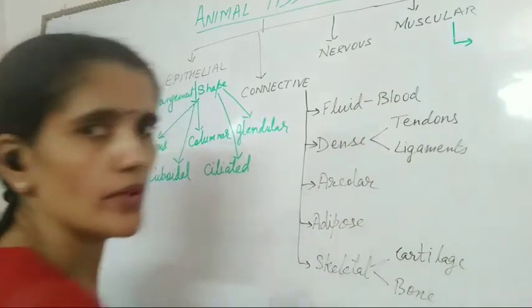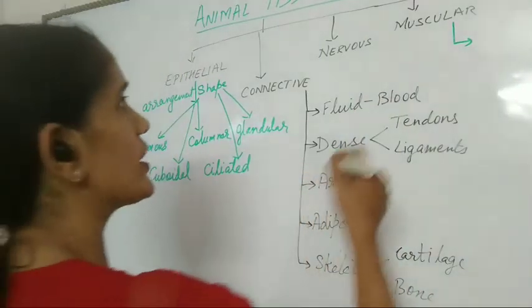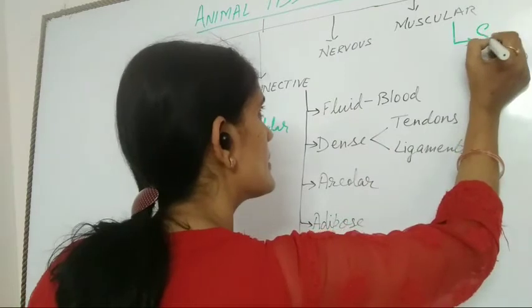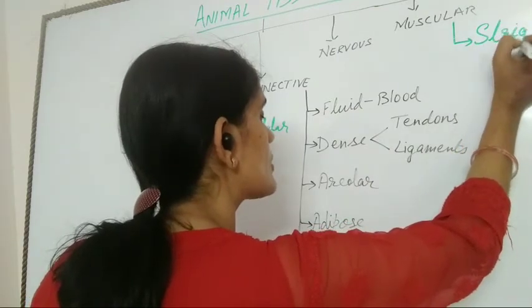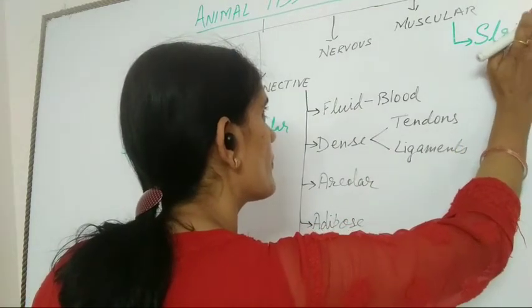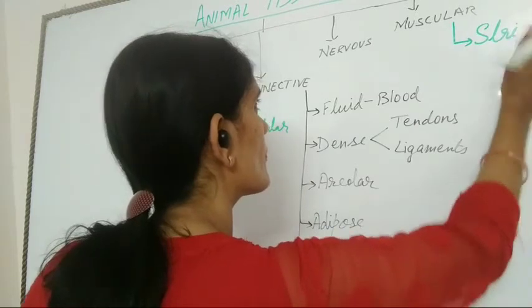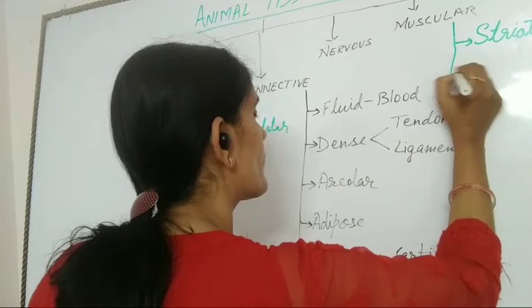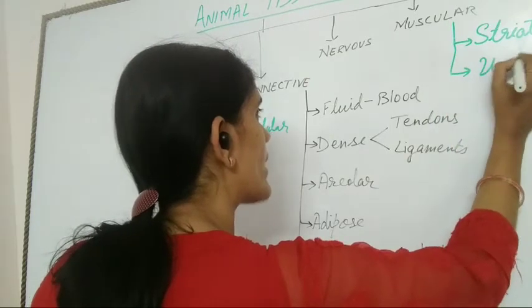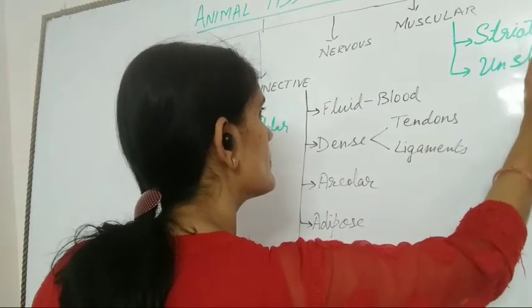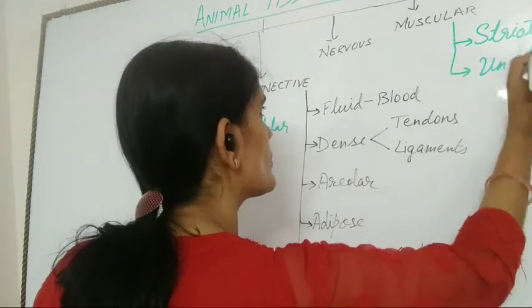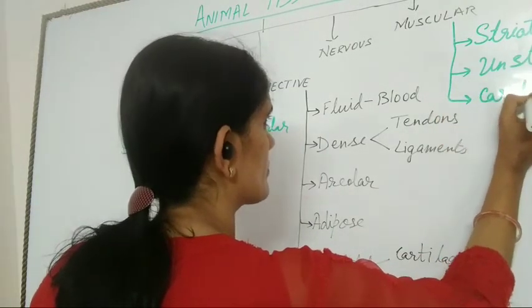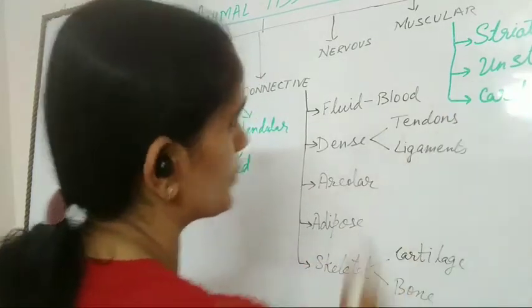Muscular tissues are of three types: striated, unstriated, and cardiac muscular tissue.